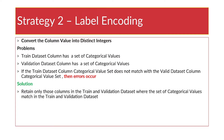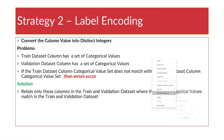Another strategy is to convert the column value into distinct integers, which is called label encoding. The problem is that the training dataset column has a set of categorical values, and the validation dataset column has a set of categorical values. If the training dataset categorical value set does not match with the validation dataset categorical value set, then an error occurs. The solution is to retain only those columns in the train and validation set where the categorical values match.